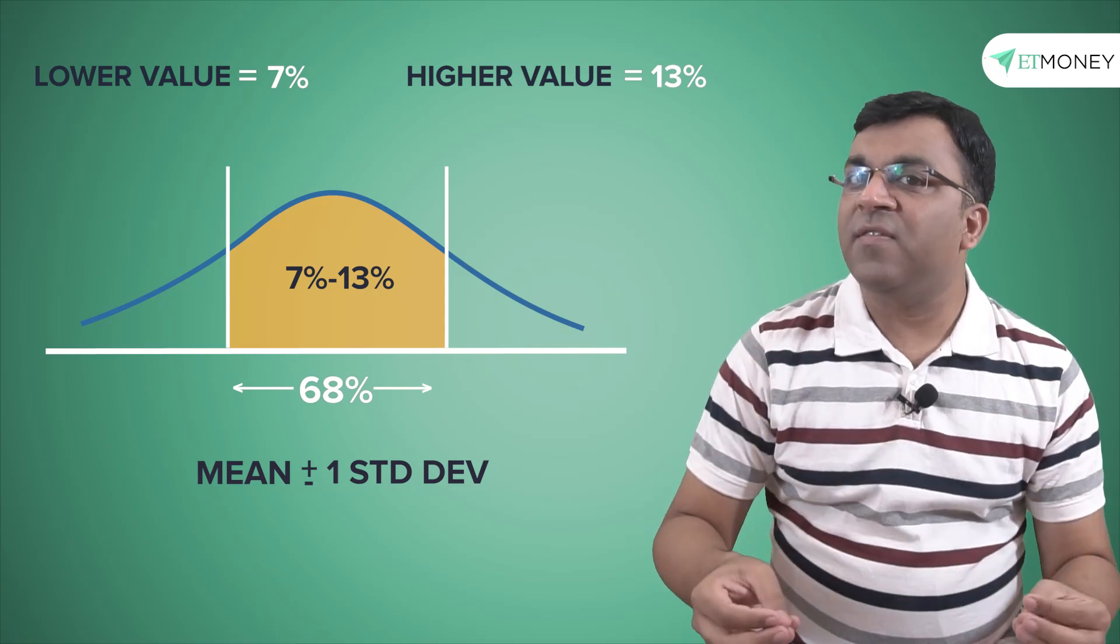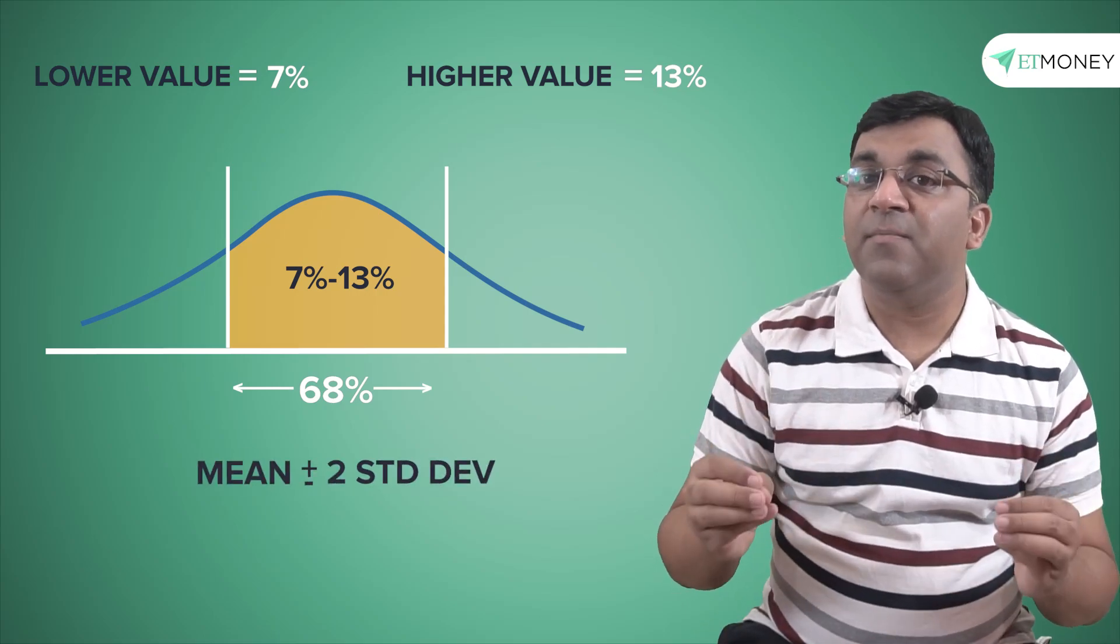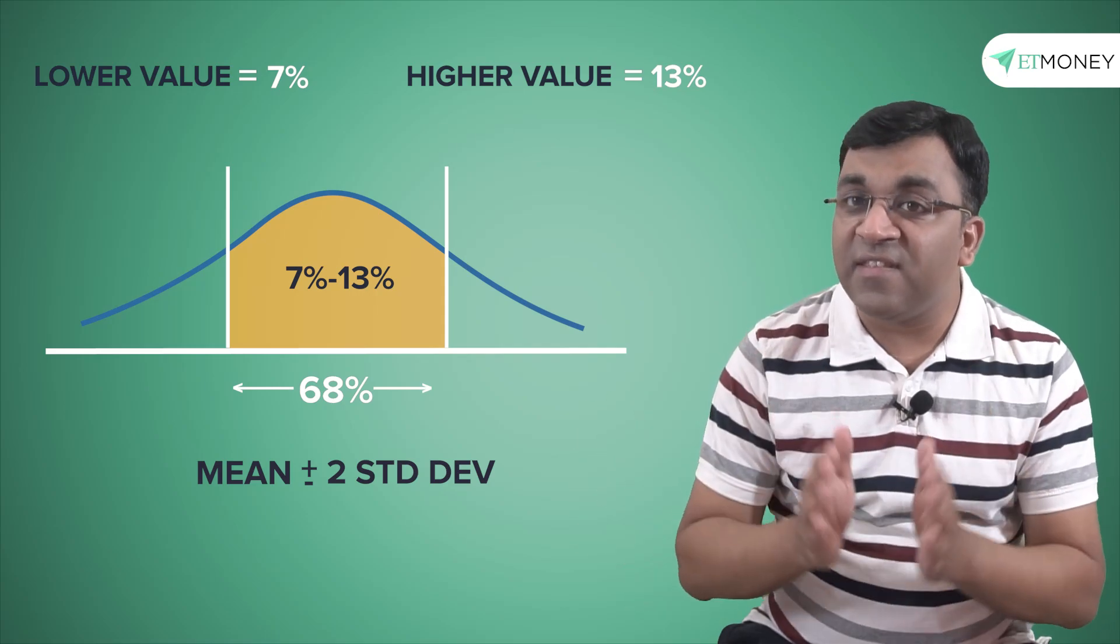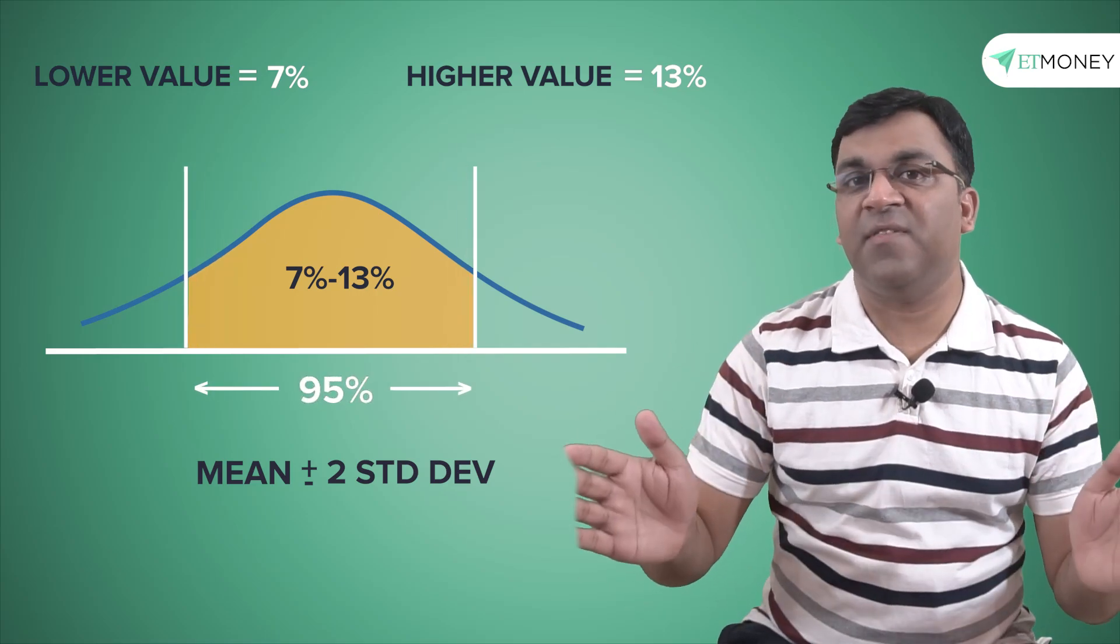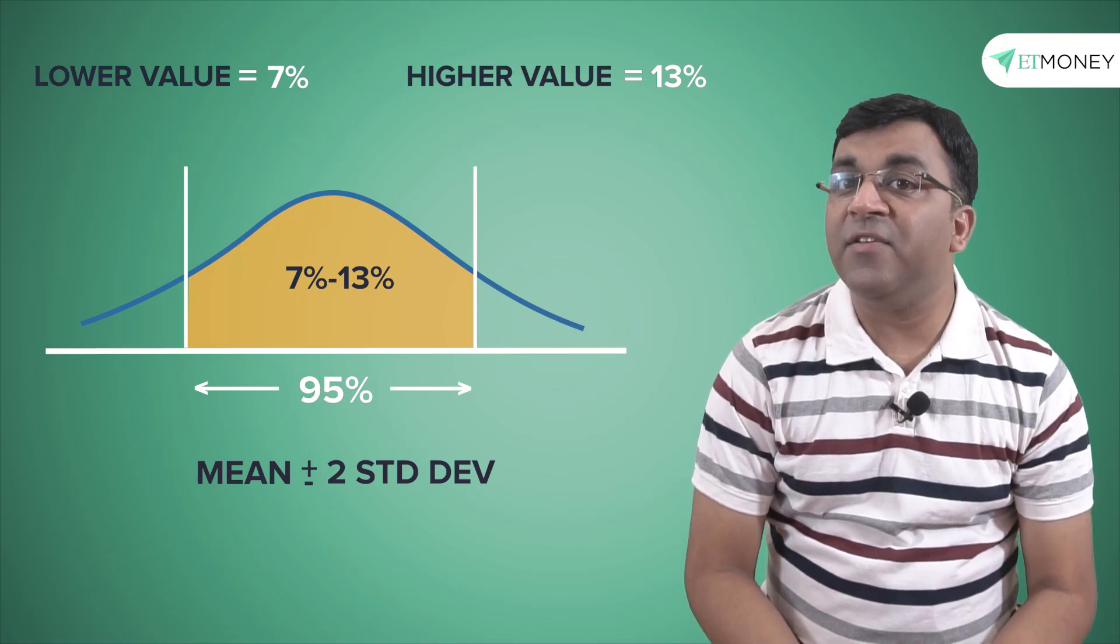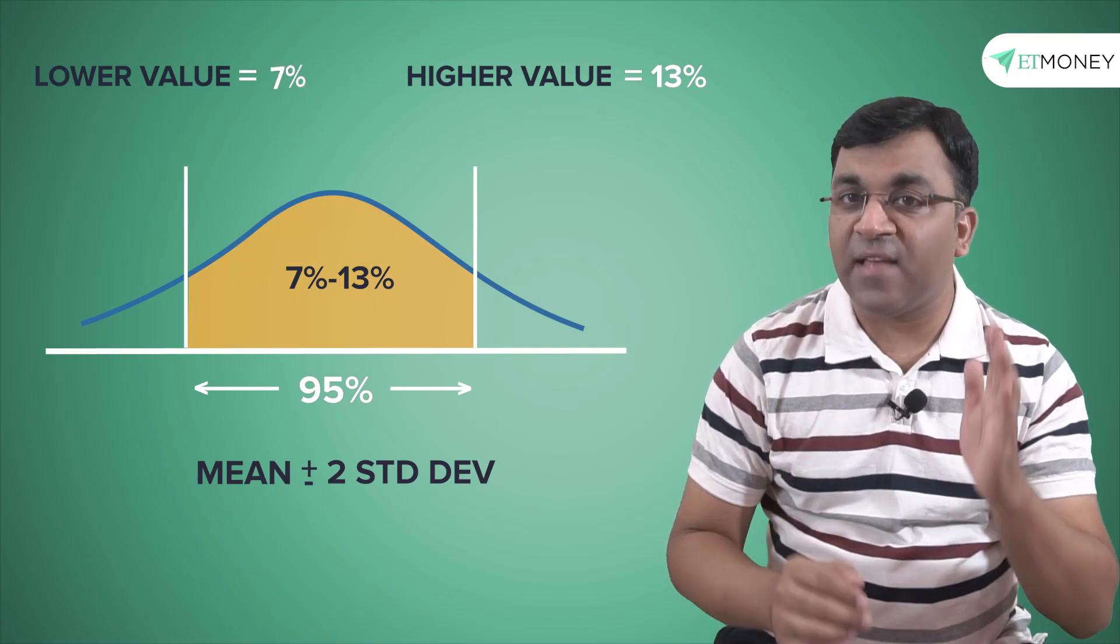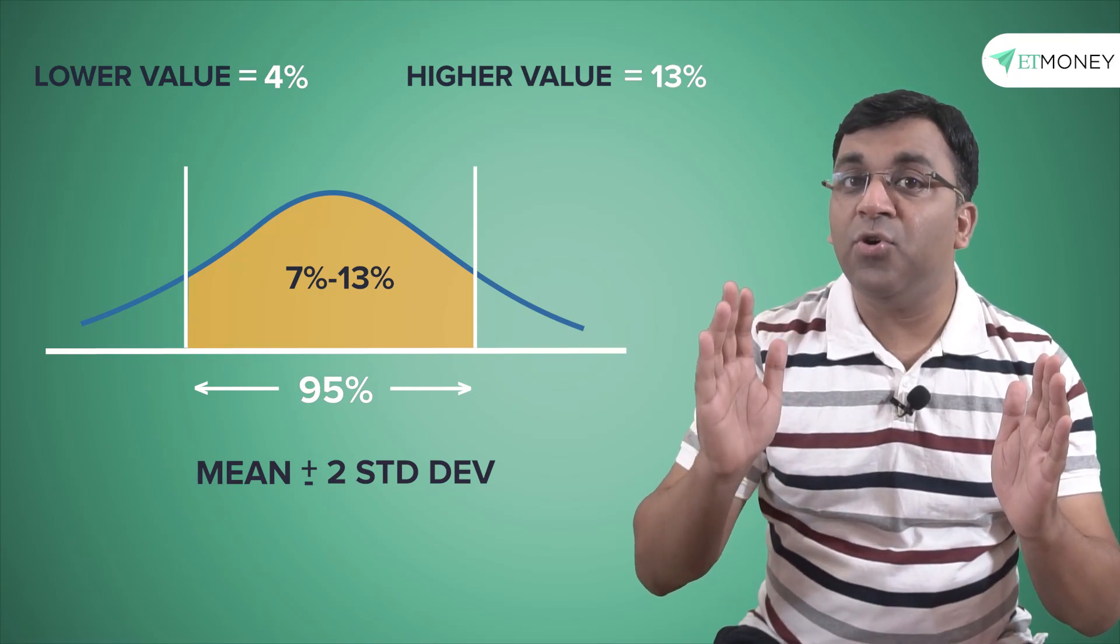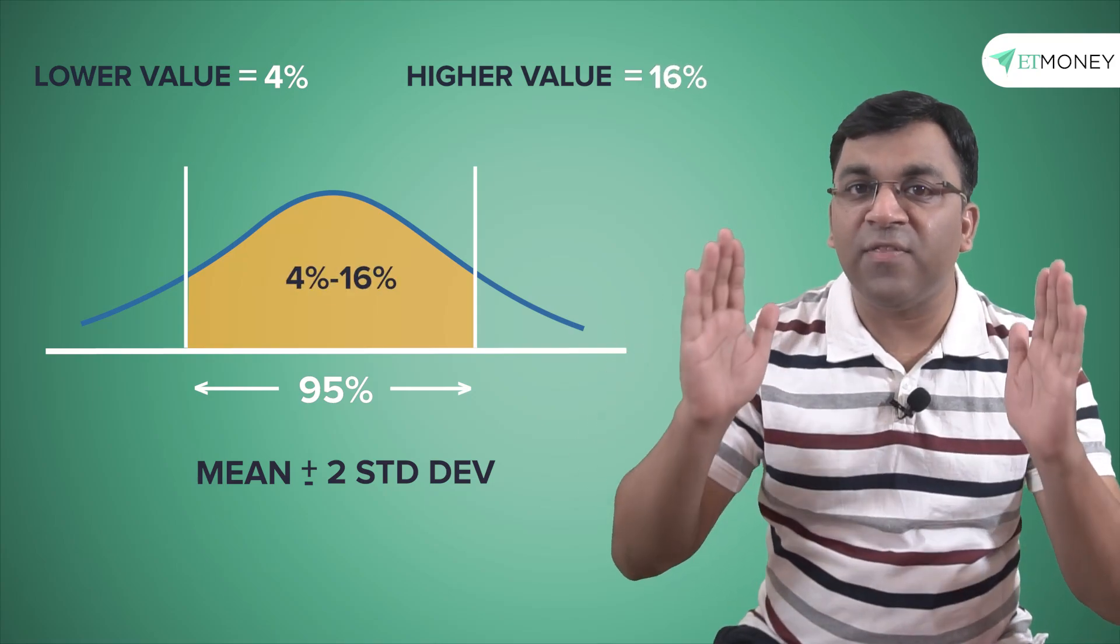And then the same concept can be applied to a mean plus minus two standard deviation measure as well, that covers not 68% but 95% of the events. In our example, this will come to 10% minus two multiplied by 3%, that's 4% on the lower range, and 10 plus two times 3, that's 16% on the upper range.